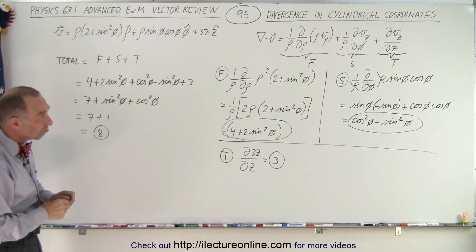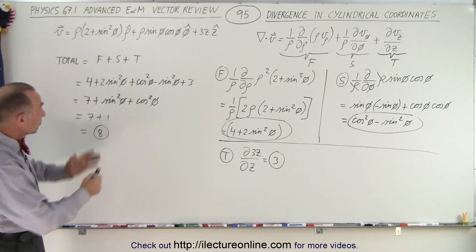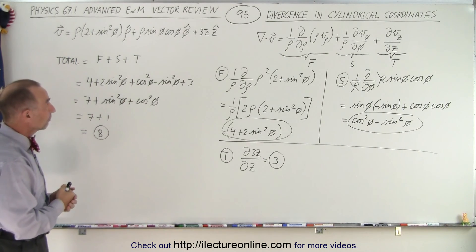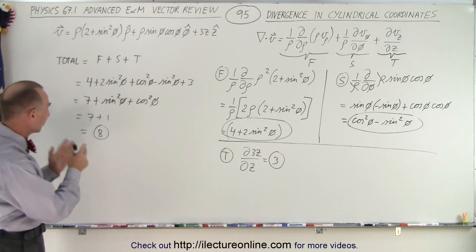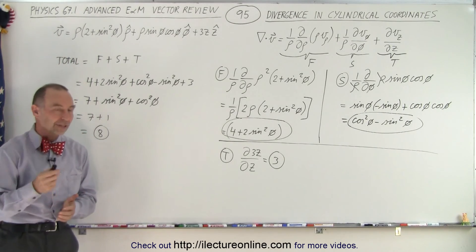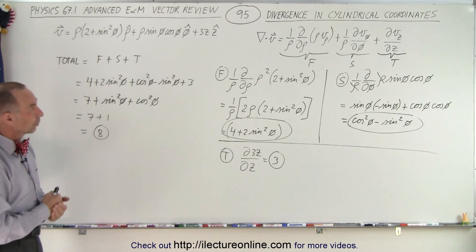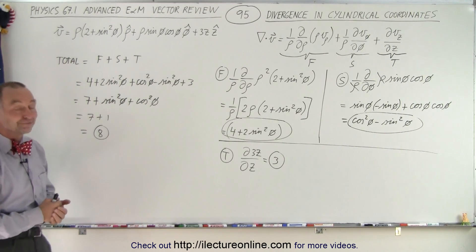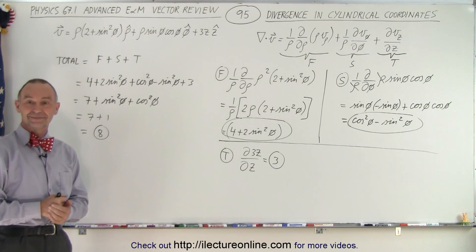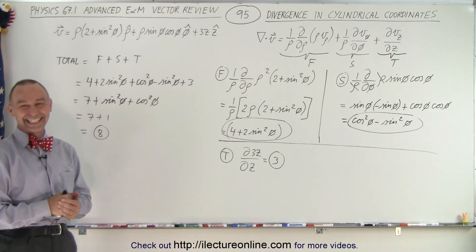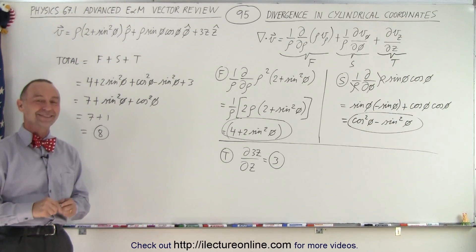So again, the mechanics are not that bad in cylindrical coordinates, even when we have a quite complicated vector function. You can see we can take each portion at a time, add them together, and that's the result of the divergence of a vector quantity in cylindrical coordinates — and that's how it's done. A harder, more complicated example.